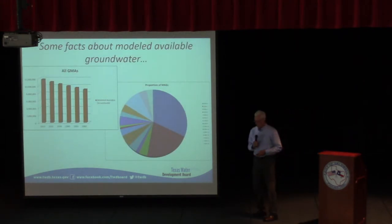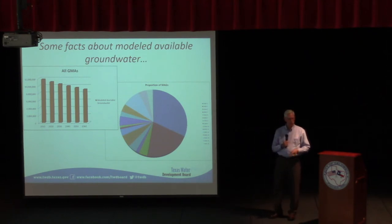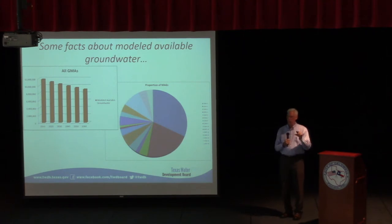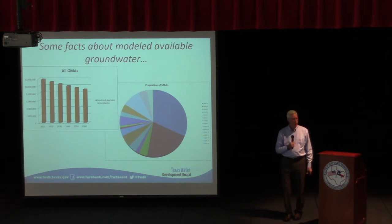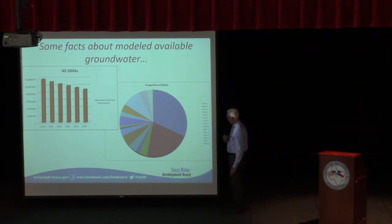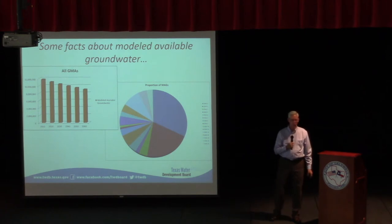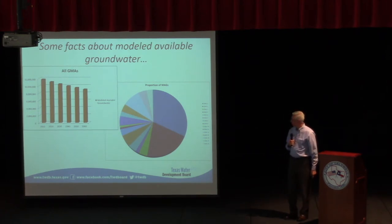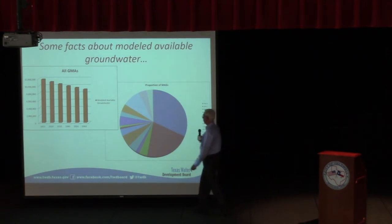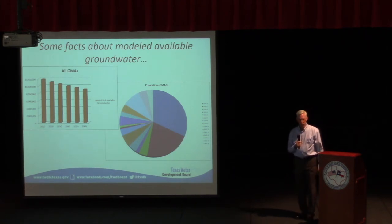Looking at data from the first cycle: if you add up all the modeled available groundwater throughout the state and look at each decade, you see that every year the MAG goes down. That's basically driven by the declining storage volume in the Ogallala Aquifer. As Robert mentioned, 40% of all the water in the state comes from that one aquifer, so it dominates the statewide groundwater conditions. Looking at the pie chart showing all 16 GMAs, over half of the modeled available groundwater comes from GMA 1 and 2 — the High Plains, the Ogallala.